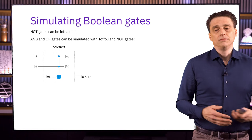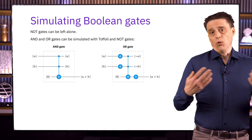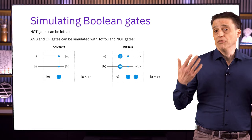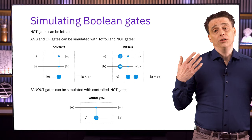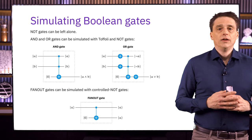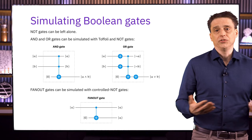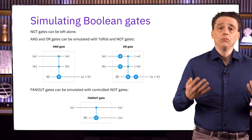The last one is FANOUT. For this one, all we need is a controlled-NOT gate along with a workspace qubit. Specifically, if we set the workspace qubit to be the target, we effectively just copy whatever standard basis state comes in — so that acts like a FANOUT gate. So, we have all our gates, and now that we have all of our gates, we can move on to circuits.